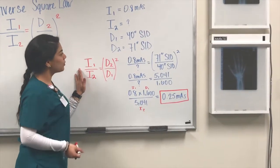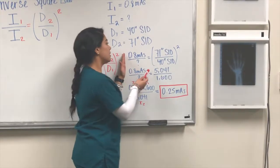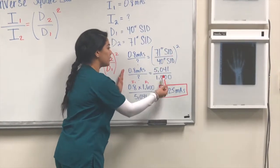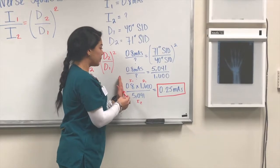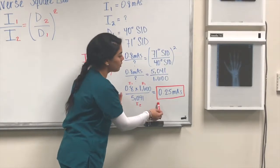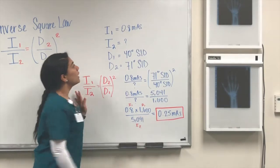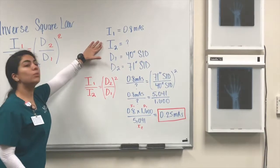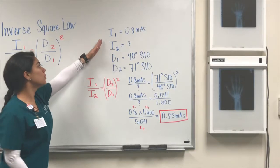We plug the factors into the formula: the first intensity over the second unknown intensity equals the second distance squared over the first distance squared. To isolate the second intensity, multiply the first intensity by the first distance squared, divided by the second distance squared. This equals 0.25 mAs. From this we can determine that when you increase your distance, your intensity will decrease, and vice versa.